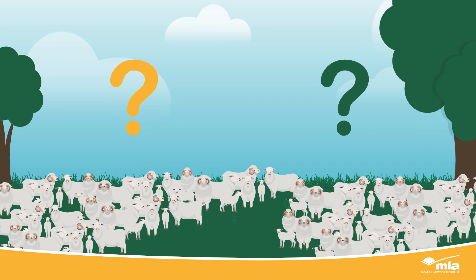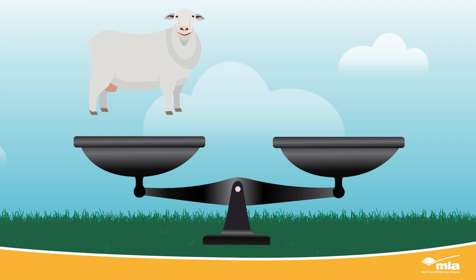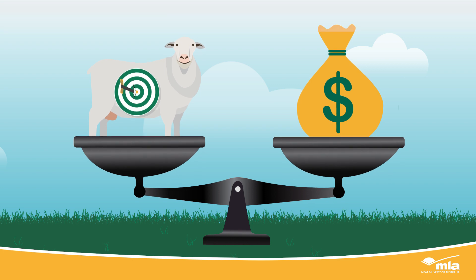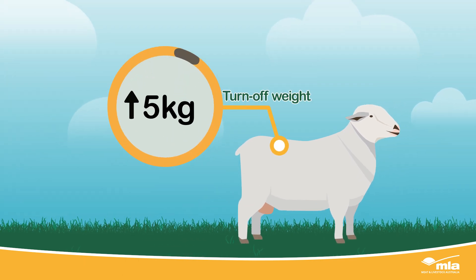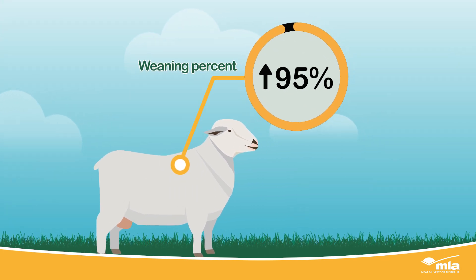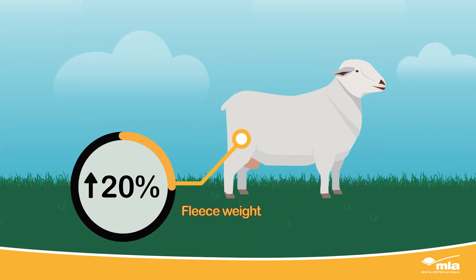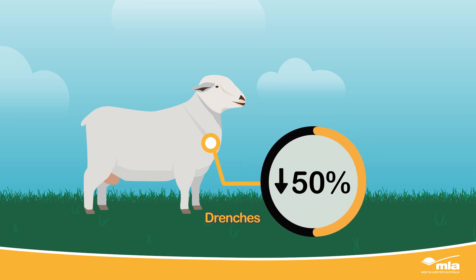Having considered all these factors, what do you want to achieve with your flock? These goals form your breeding objective. Your objective should be balanced to include all factors which influence productivity and profit. For example, your breeding objective over the next five years may be to increase turnoff weight by five kilograms, increase weaning percentage from 85 to 95 percent, increase fleece weight by 20 percent while maintaining fiber diameter, and reduce the number of drenches required per year by 50 percent.